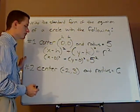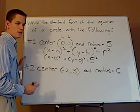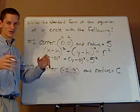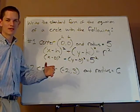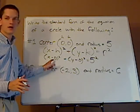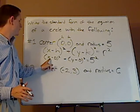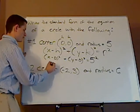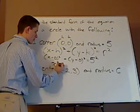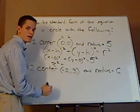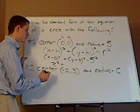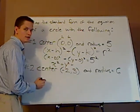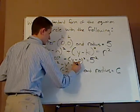Then you can simplify if possible. If the simplification is going to be drawn out, like you have to FOIL and everything, you can just leave it in standard form. But here, x minus 0 is just x, so it's going to leave you with x² plus y², and 5 squared is 25.